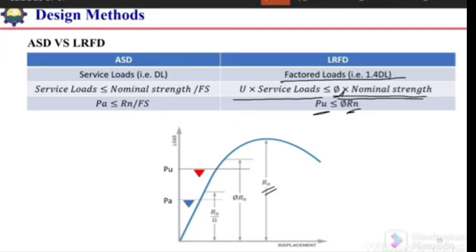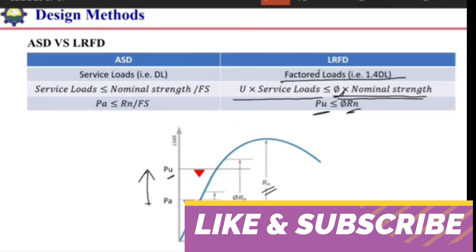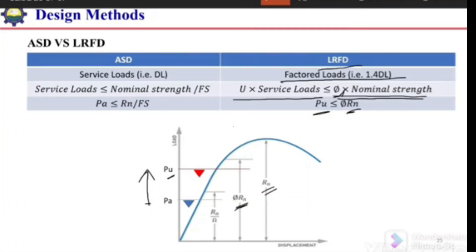In LRFD, we reduce the nominal strength by multiplying it with the phi factor. For steel tension members it is 0.9, and sometimes 0.75. We also increase the service load by multiplying it with the load factor, then compare the design strength with the applied factored loads. The design strength should be greater than the factored load. This is the approach used in LRFD — we apply factors on both the load and the resistance.